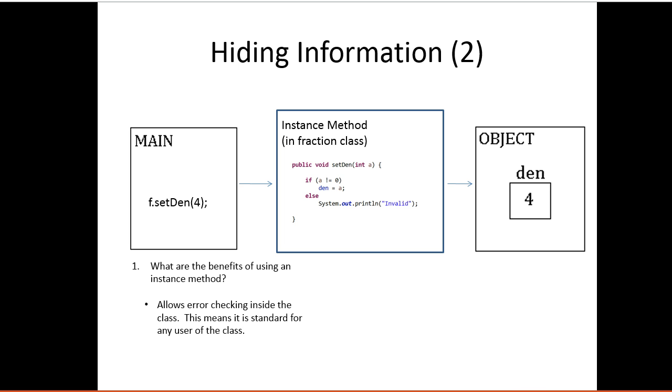So what it does is it means that the error checking is standard for everyone. It's managed by the class, in the class. So if I want to work with someone, I can be sure that certain things are always going to be true. One in this case is that denominator will never be zero. This also reduces your code. Because if you write this checking process inside an instance method, you write it once and can use it numerous times.